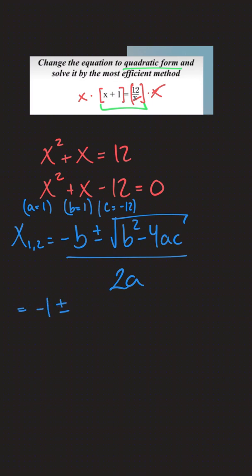Plugging that in, we get negative 1 plus or minus 1 minus 4 times 1, 4 times negative 12, which is 48, divided by 2. This gives us negative 1 plus or minus square root of 49, which is 7, divided by 2.